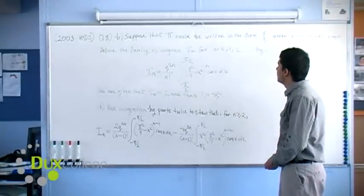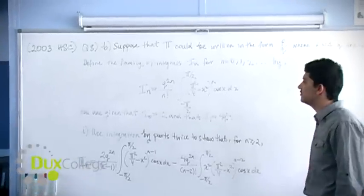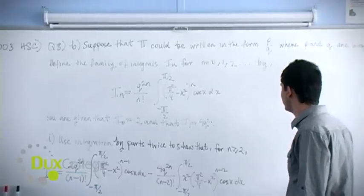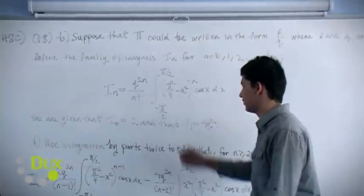The question says, suppose that pi could be written in the form p over q where p and q are integers. We find the family of integrals i of n for n equals 0, 1, 2 and positive integers by i of n equals this expression here.